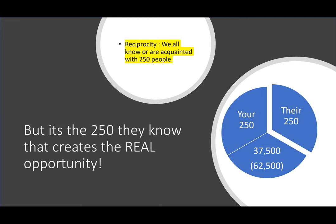Everybody knows at least 250, but the real opportunity exists in the 250 that they know. It's not so much the people you know — it is in the beginning, because that's how you're going to get to the people they know. You've got your 250, they've got their 250. In a perfect world that would be 62,500 people — 250 times 250 — but we know there's crossover. Some of their 250 could already be on your list. So I like to say there's about 100 pure new people per contact, which makes about 37,500.